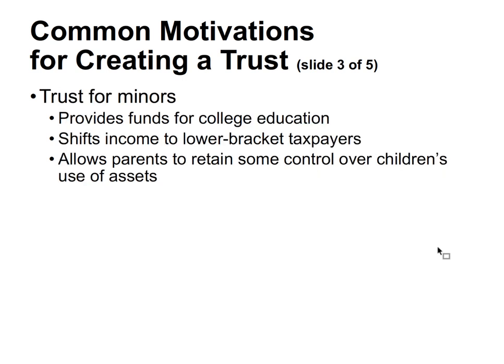A trust for minors addresses situations where wealthy individuals have very young children — you wouldn't just give them a billion dollars outright. You can put age restrictions so they get a certain amount when they turn 18, 21, 30, or 35, or upon marriage or various events. This is a way to set money aside for college education and to shift income to lower bracket taxpayers, though the kiddie tax must be taken into account. It also allows parents to retain some control over children's use of assets.